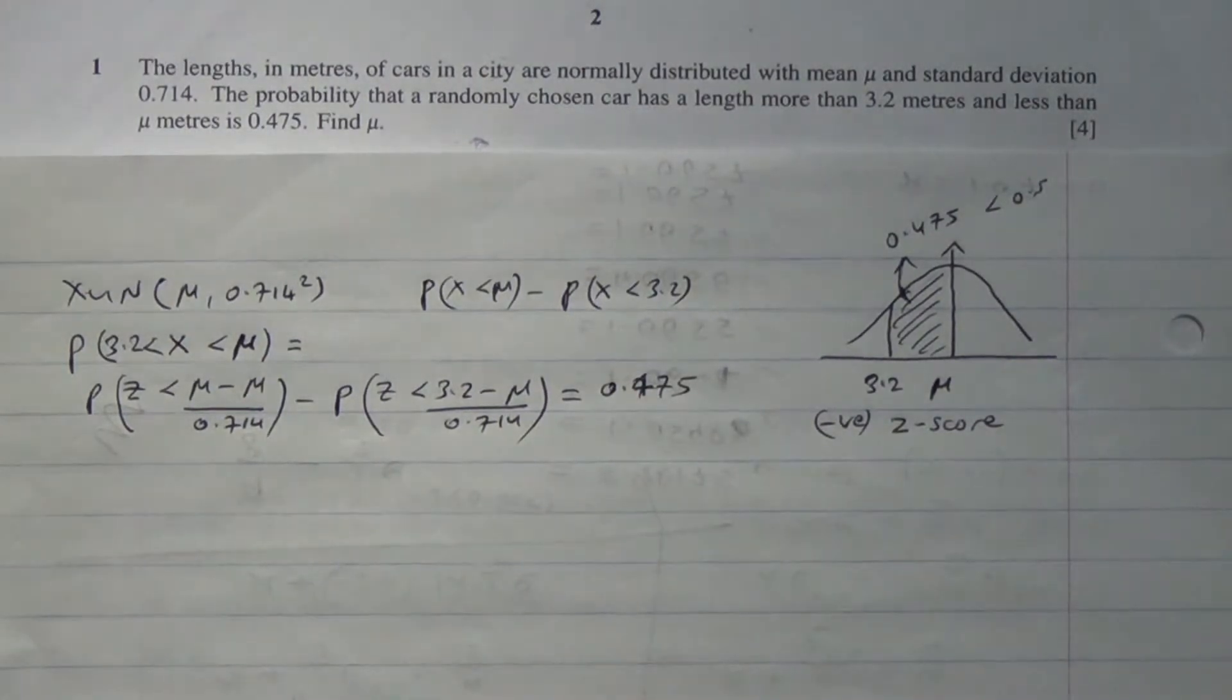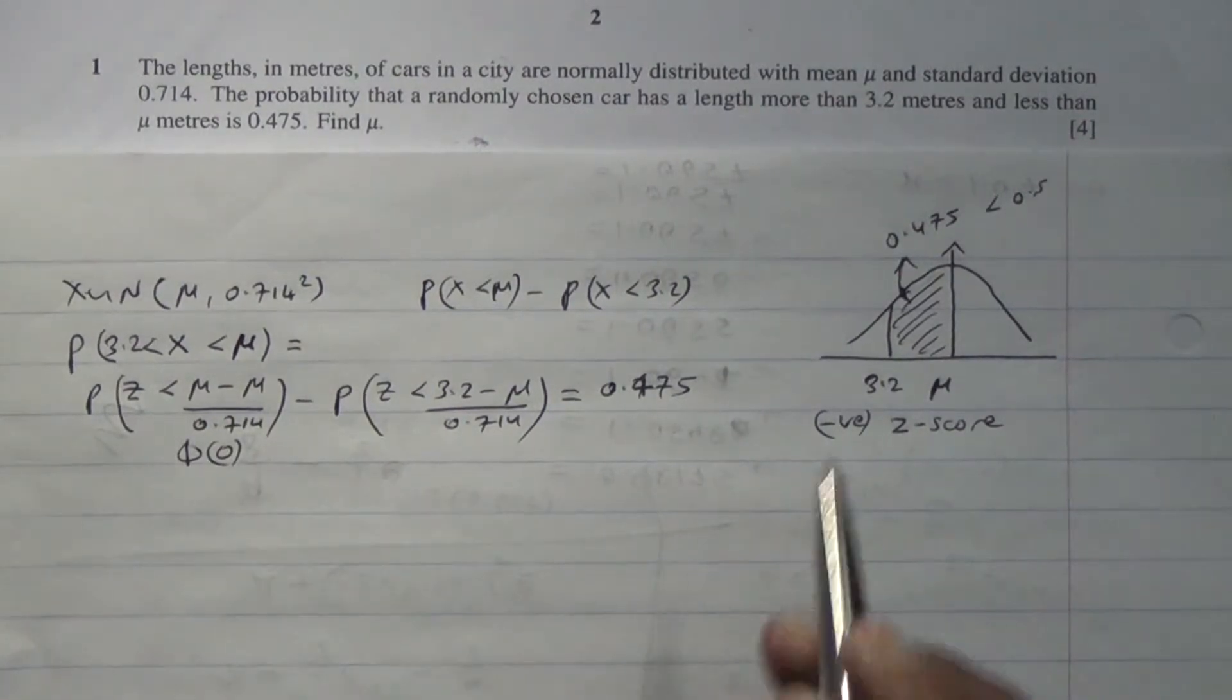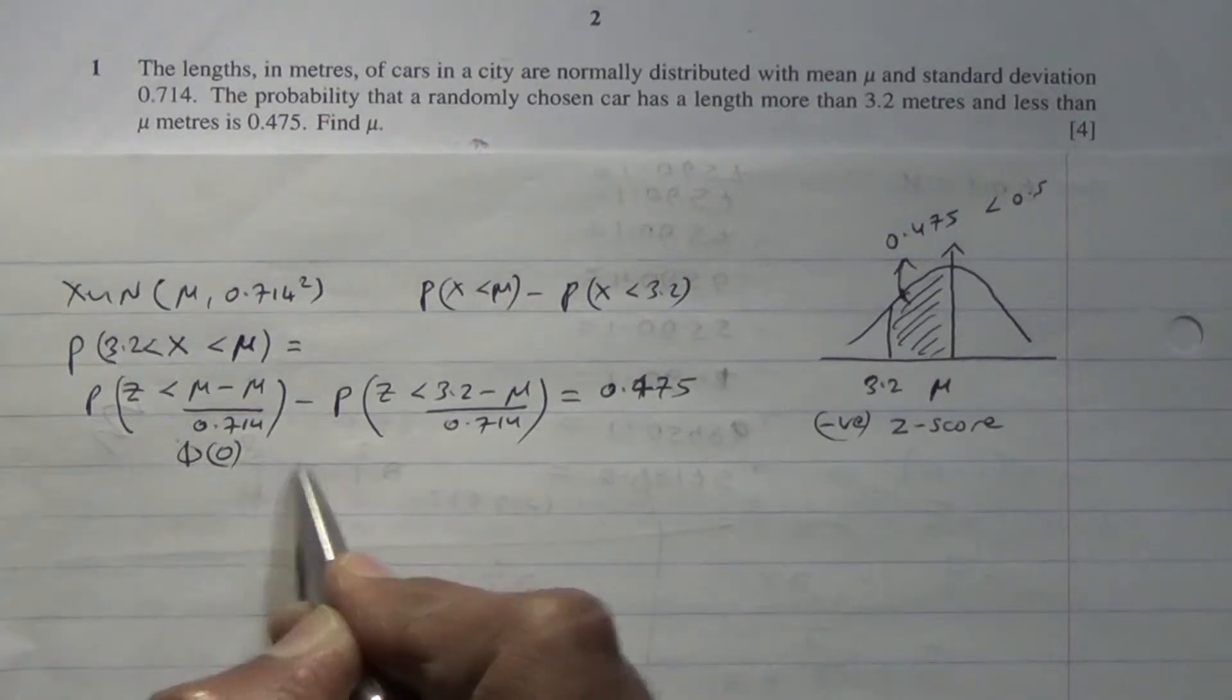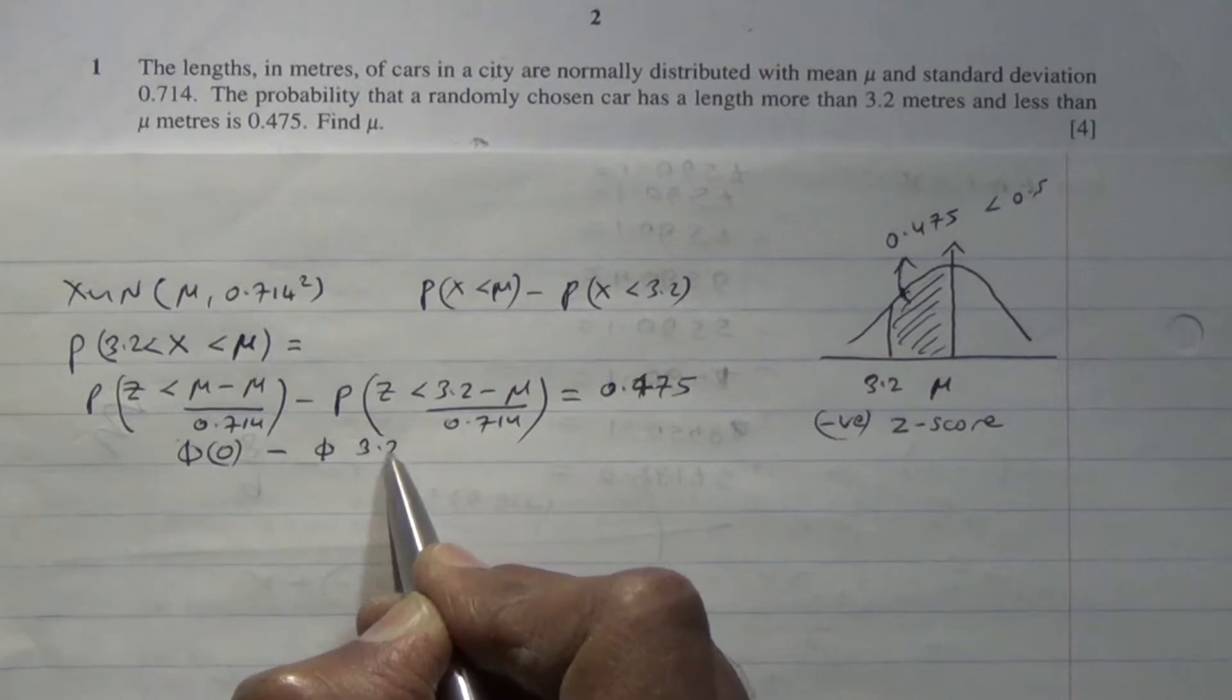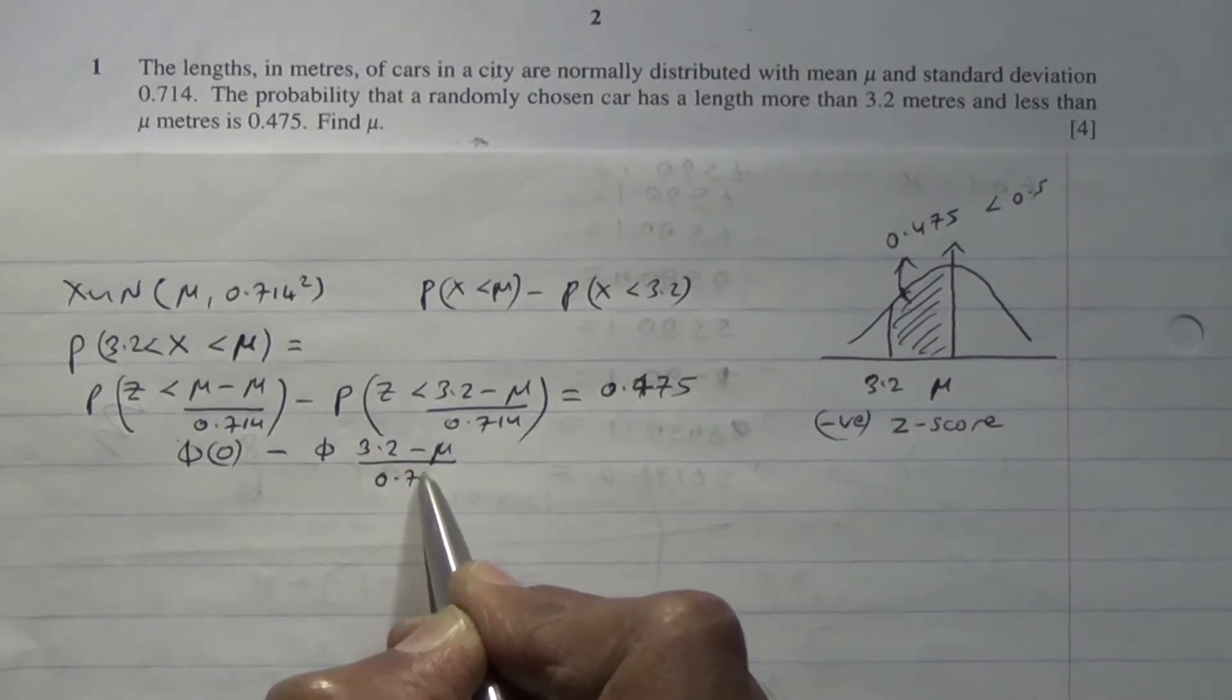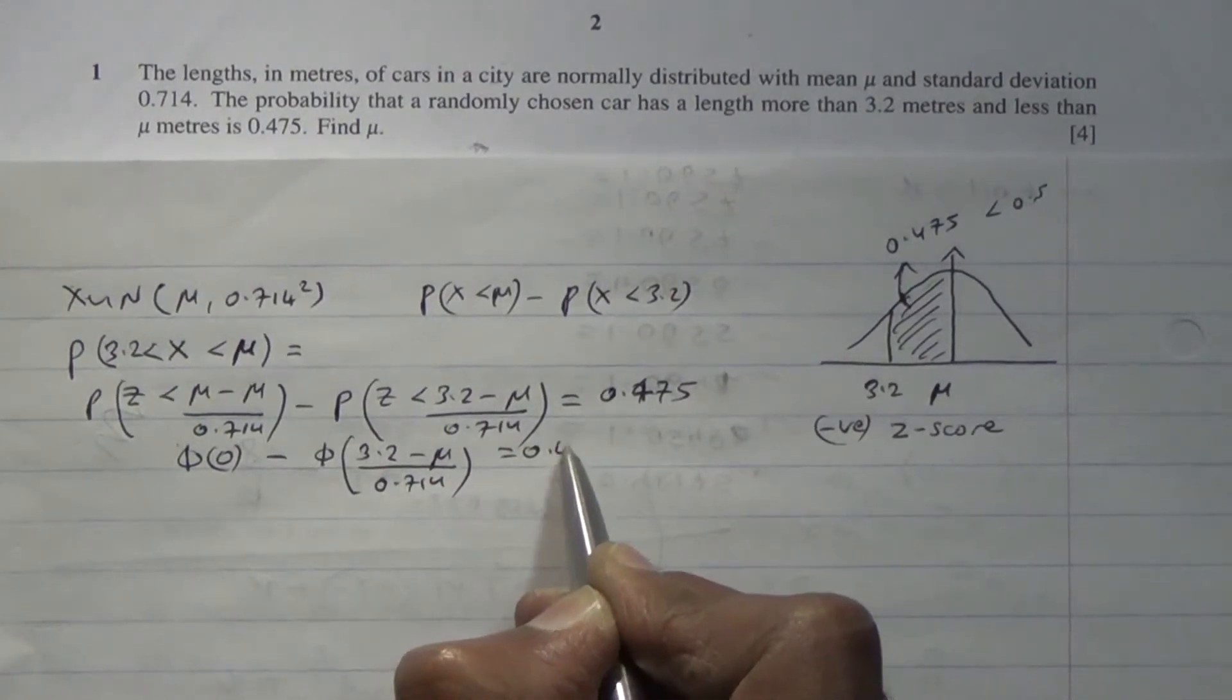From here, this is 0. Probability of z being less than phi of 0. Because we said it's a negative z-score, so we're going to look at that in a moment. Minus the phi of 3.2 minus mean mu over the standard deviation 0.714. So that's going to be equal to 0.475.